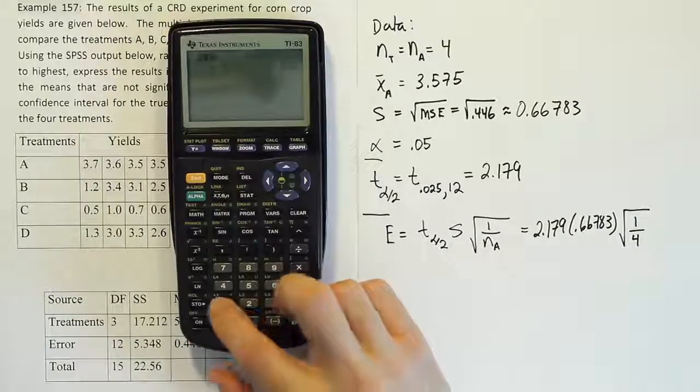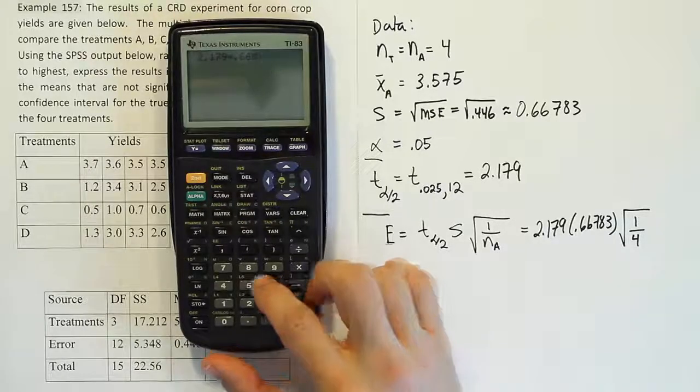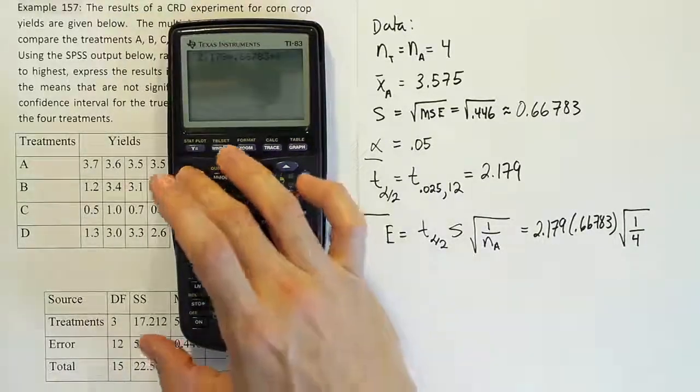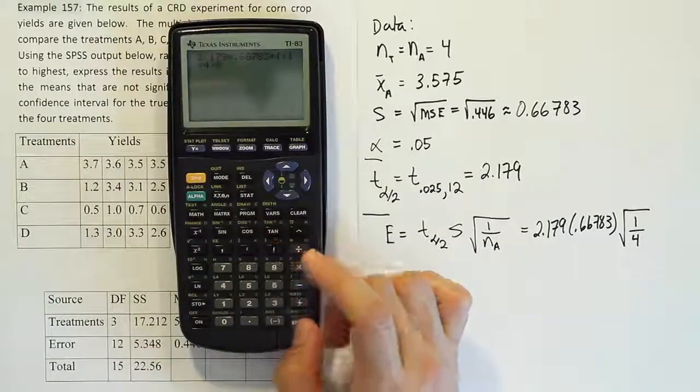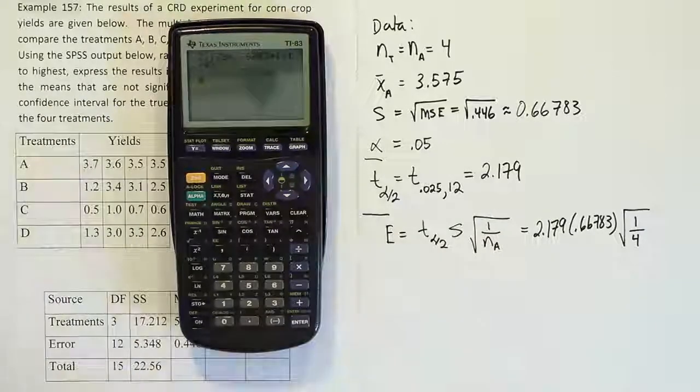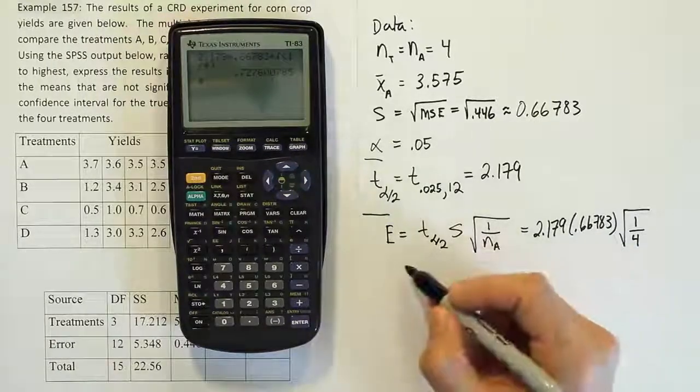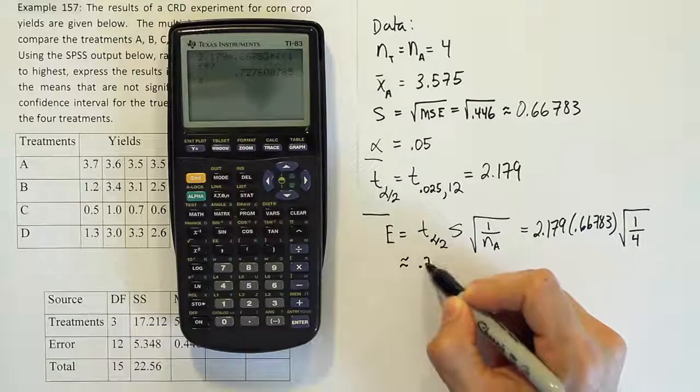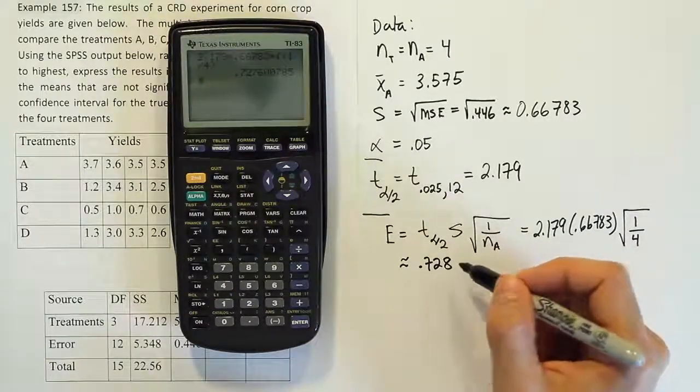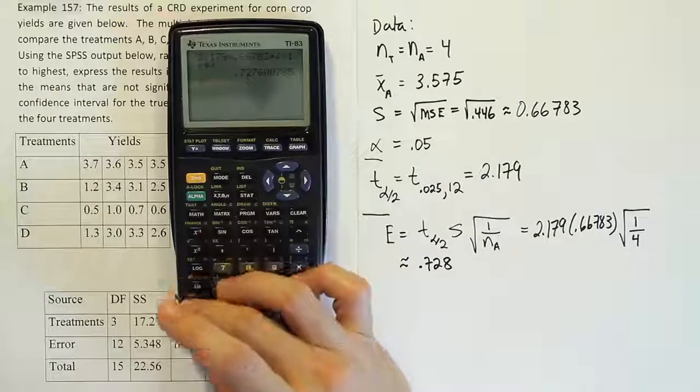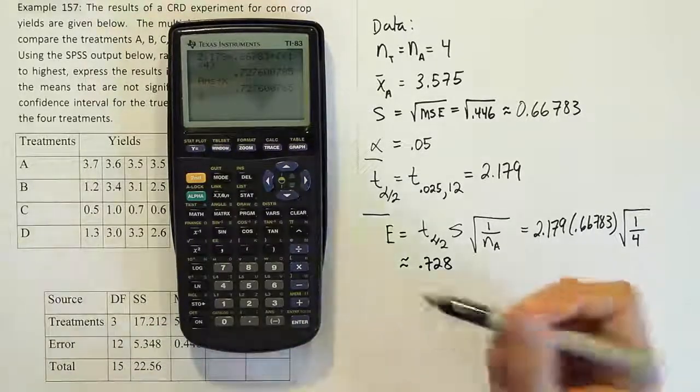So we'll have 2.179 times 0.66783 times the square root of 1 divided by 4. You could also put, of course, 0.25. I wanted to use the fraction in case later on with a fraction you're not familiar with. Alright, so you end up with the answer 0.728 roughly. So let's say the E is approximately 0.728. Alright, so that should be good enough. You can carry an extra decimal place if you want. I'm just going to use 0.728. In fact, really, I'm going to store it in my calculator and just use the full thing. But for paper, I'll write it down as 0.728.